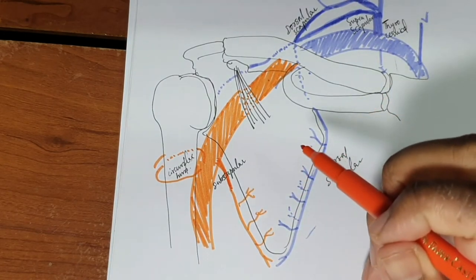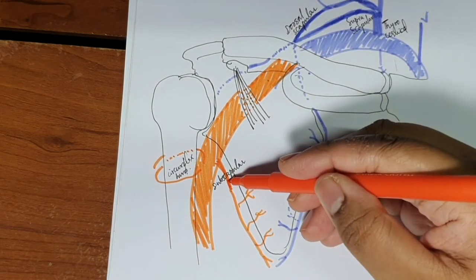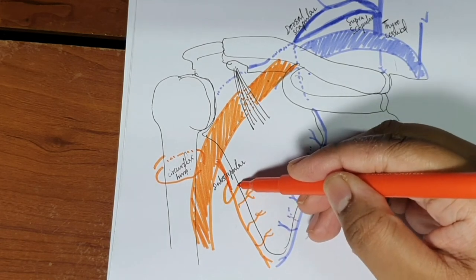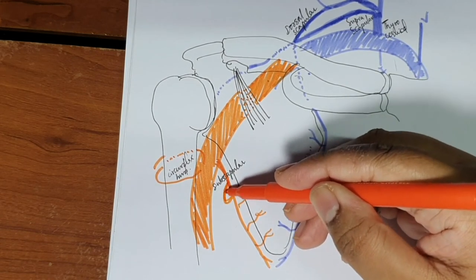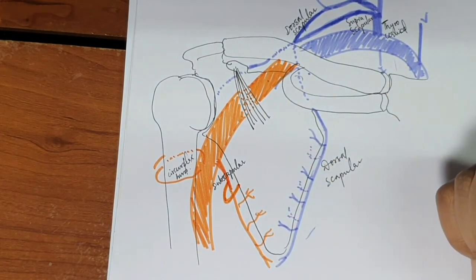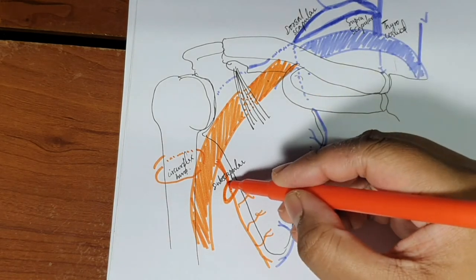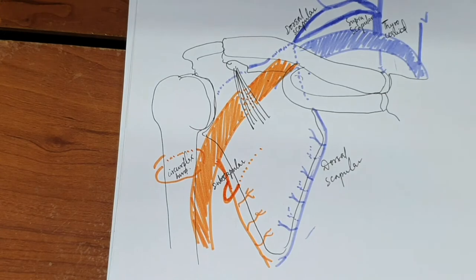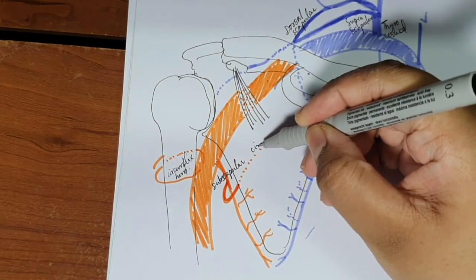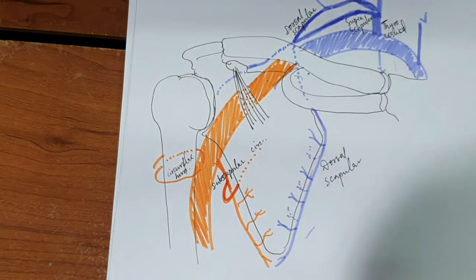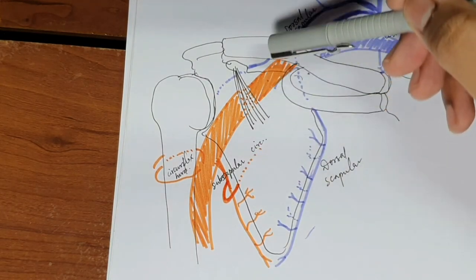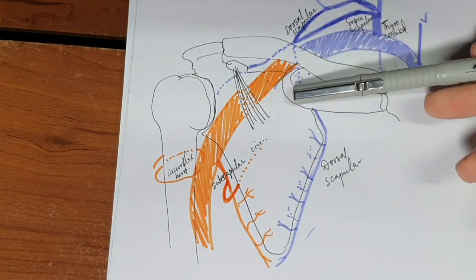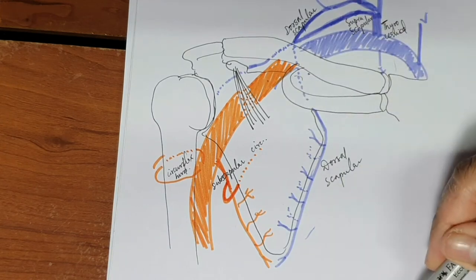The subscapular also gives out a branch called the circumflex subscapular artery. The circumflex subscapular artery goes behind to the posterior aspect of the scapula. We will see these arteries that travel to the posterior aspect in the next image.